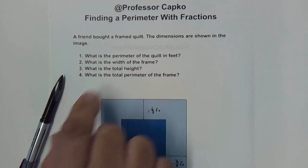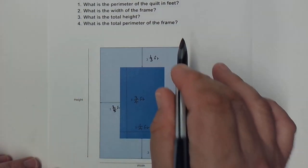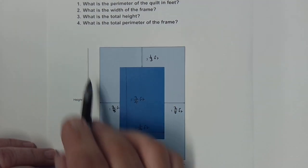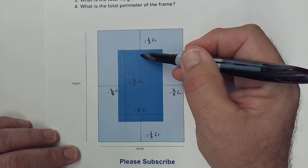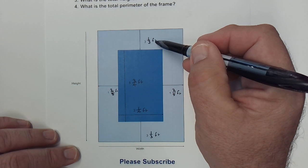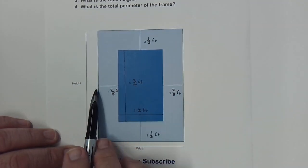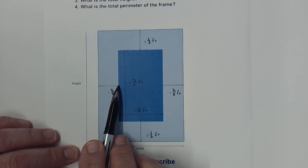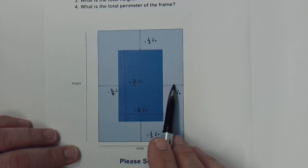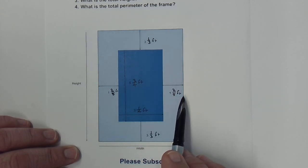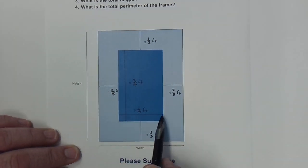In this problem a friend bought a framed quilt. The dimensions are shown in the image. We have an outer frame and the quilt on the inside. There's an unknown height and width for the frame. From the top of the frame to the top of the quilt is three and one-third feet, and from the bottom of the quilt to the bottom of the frame is also three and one-third feet — so it's centered vertically. From the left side of the frame to the left side of the quilt is one and two-fifths feet, and likewise on the right — centered horizontally. The quilt's height is five and three-quarters feet and its width is three and a quarter feet.